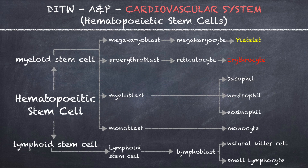Hopefully that has made this chart a little bit more understandable, to see how everything differentiates and how the formed elements of the blood all stem from the same stem cell — the hematopoietic stem cell.